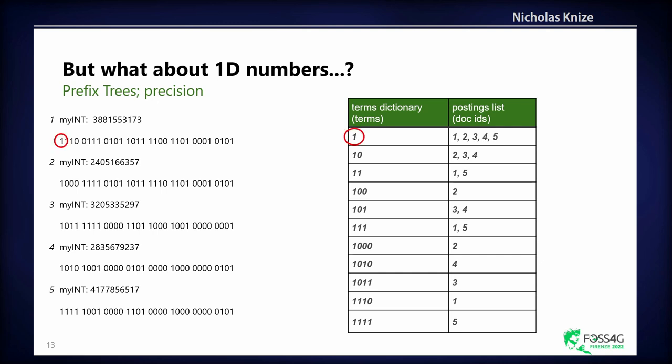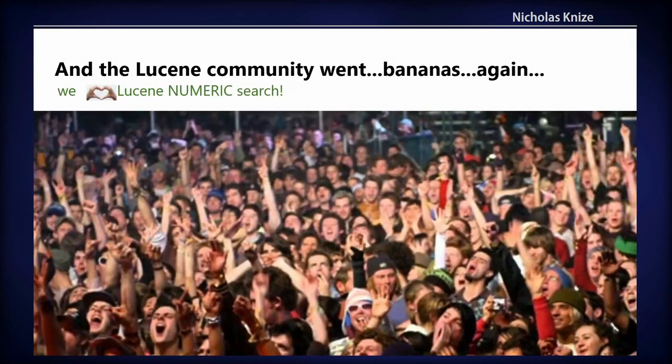The one goes into the one, and naturally everything prefixed with a one, which in the normal case would be negative numbers, so we actually switch it. We bit flip the first one. Zeros become negative in the terms dictionary so it's numerically sorted correctly. That's a nuance here. But in this case, they're all positive integers, so one is going to have all the documents one through five. Then I continue, one zero is going to be two, three, and four.